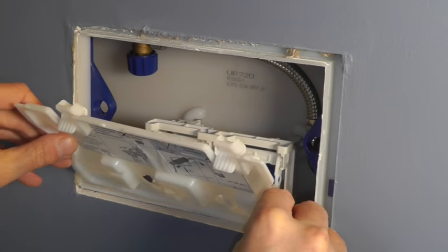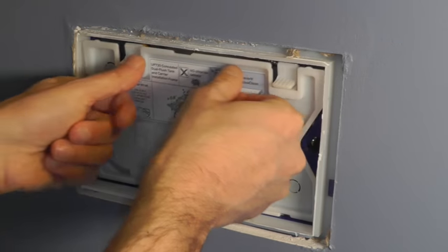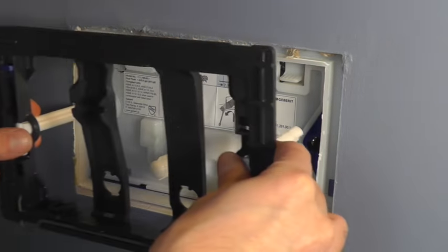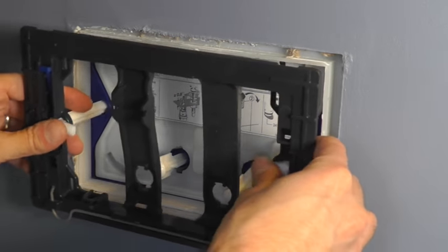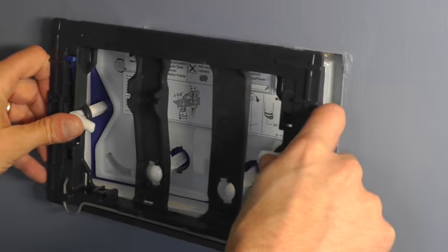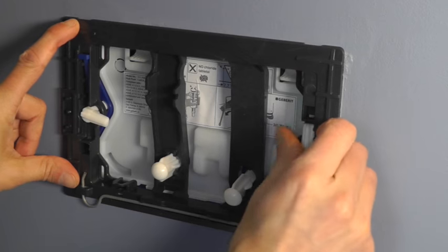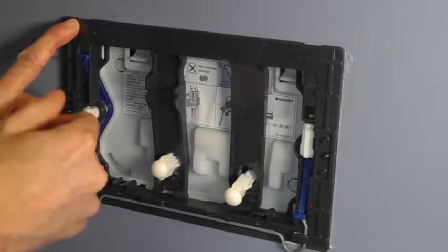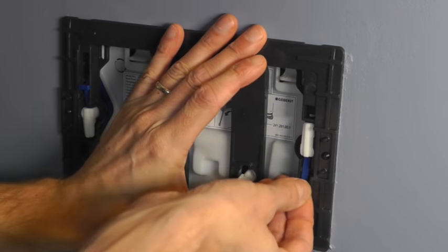So putting it back together it's the reverse procedure. Just put this cover in first. Putting this frame back in. Don't forget to push this in all the way and then move these clockwise. And we put these tabs in.